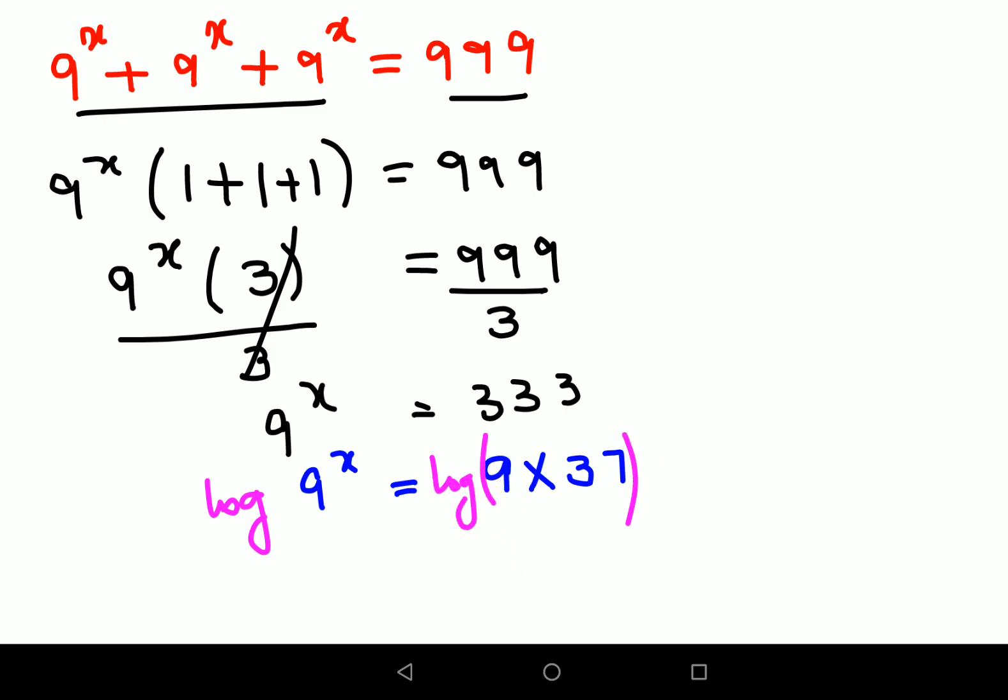Now remember, log of any number raised to a power can also be written as power into log of that number. So here also x will come ahead. You will have x log 9 equals to log of 9 times 37.